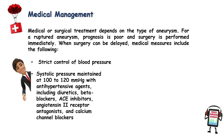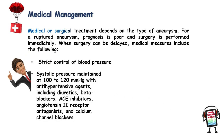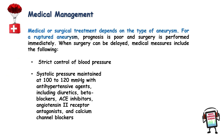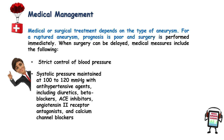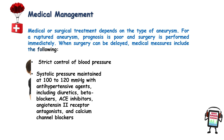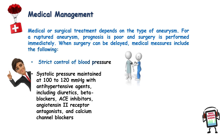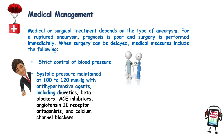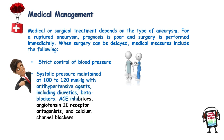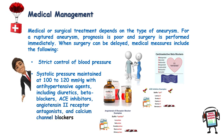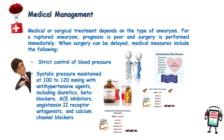Medical management: medical or surgical treatment depends on the type of aneurysm. For a ruptured aneurysm, prognosis is poor and emergency surgery is performed. When surgery can be delayed, medical measures include strict control of blood pressure, with systolic pressure maintained at 100 to 120 mmHg using antihypertensive agents including diuretics, beta blockers, ACE inhibitors, angiotensin II receptor antagonists, and calcium channel blockers.